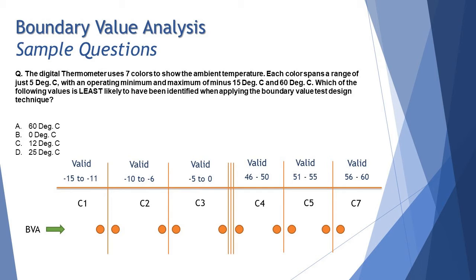So this is what it means by saying the question that each color spans for a range of just 5 degrees. So each set of 5 degrees you will have one particular range and C1 represents the color 1, C2 is color 2 as an output.